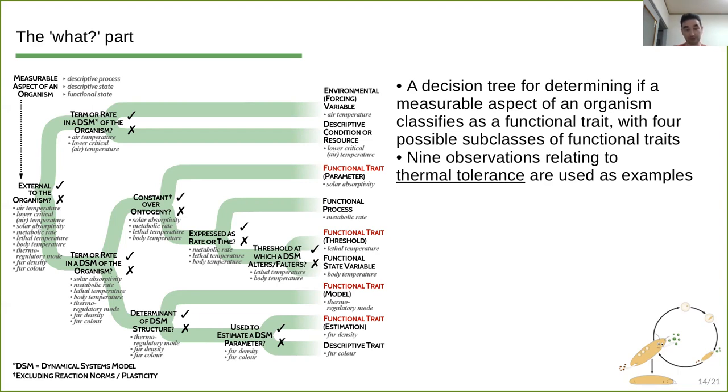So for example, thermoregulatory mode is, so we could be working either with an ectotherm or an endotherm. And obviously that will affect the model structure. So we do have a functional trait of the model type. And this particular functional trait actually decides the shape of the dynamical systems model. The other two quantities that we have here, characteristics, fur density and fur color, we can ask, are they used to estimate the model parameters? So fur density can actually be used in that sense, and then it's an estimation functional trait, whereas fur color is not, it is just descriptive. It does tell us something about absorption of radiation, but it's not quantitative and cannot be used in the model. For that we need the functional trait that is mentioned above, the parameter functional trait, specifically solar absorptivity, to get that kind of information.